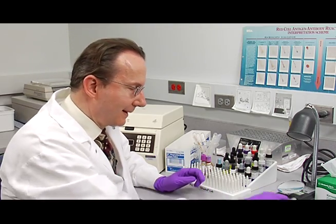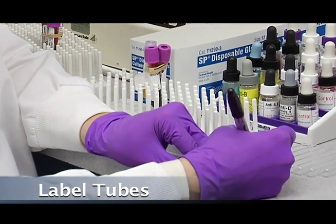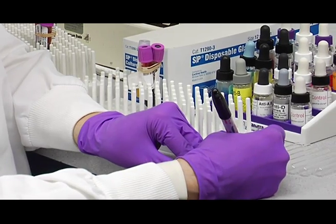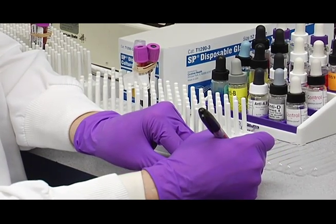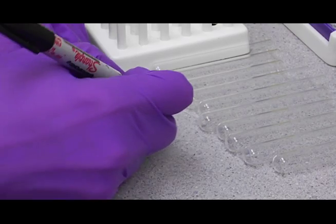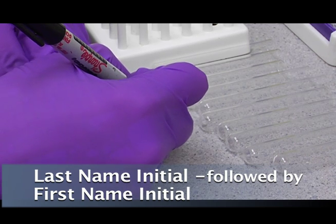And the next step is to label your tubes. Make sure you label them as outlined in your laboratory manual. We're going to label these with the initials of the patient. For confidentiality, we'll just make up some initials for this today. So we're going to use the initials for Adam Sandler.